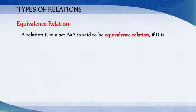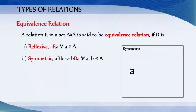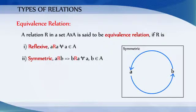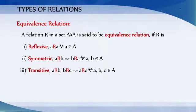A relation R in a set A cross A is said to be an equivalence relation if R is reflexive (a relates to a for every a in A), symmetric (a relates to b implies b relates to a for every a, b in A), and transitive (a relates to b and b relates to c implies a relates to c for every a, b, c in A).